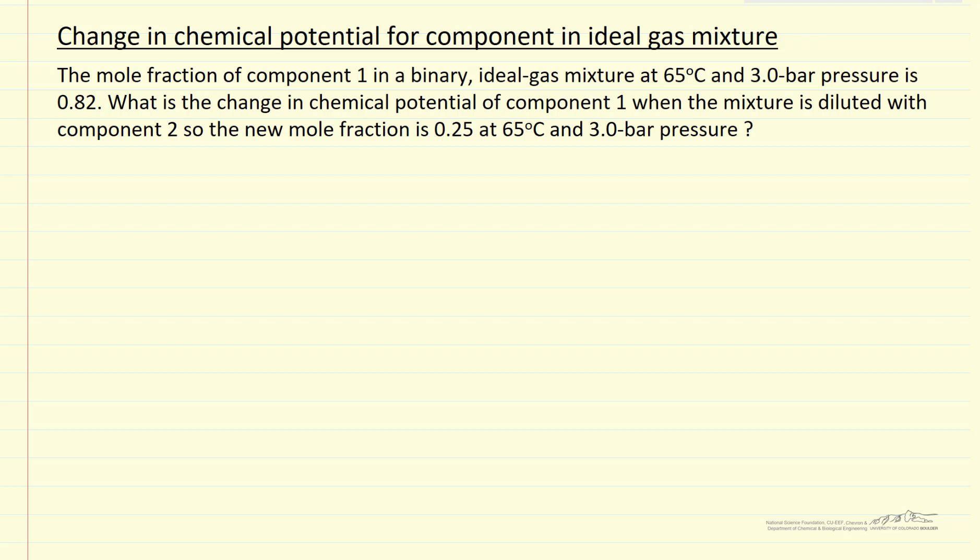So the equation that we want to use is the chemical potential, this is of component one, and let's say at the final condition minus the chemical potential of component one at its initial condition is related to the log of the fugacities. And so fugacity one at the final condition, we use this notation to indicate it's in a mixture, fugacity at the initial conditions.